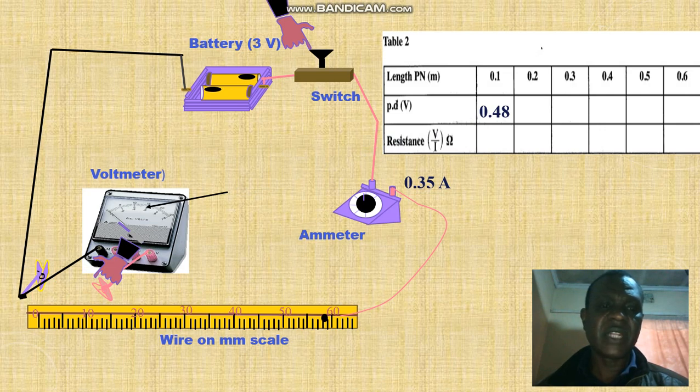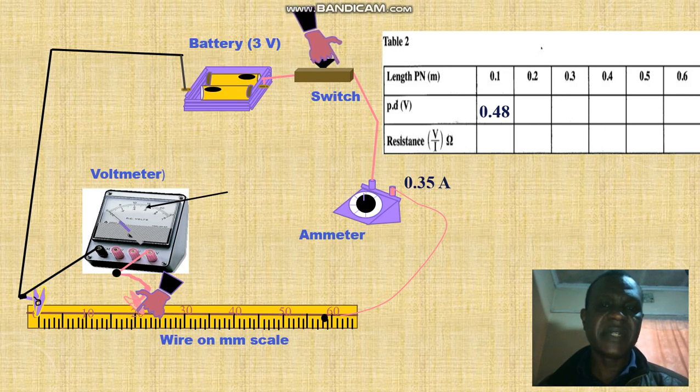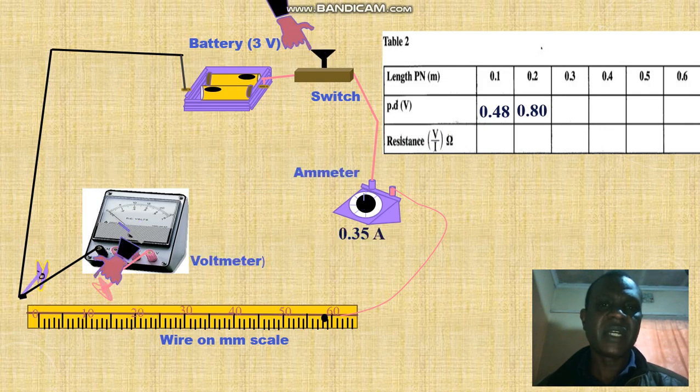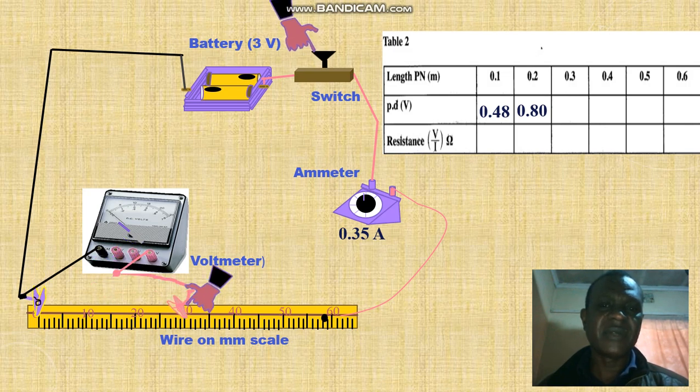Then we measure 30 centimeters. Now we move the clip to 0.2, that is 20 centimeters on the wire. Then we get the voltmeter reading. Then we move it to 30 centimeters, close the switch, get the voltmeter reading 1.20 and record.